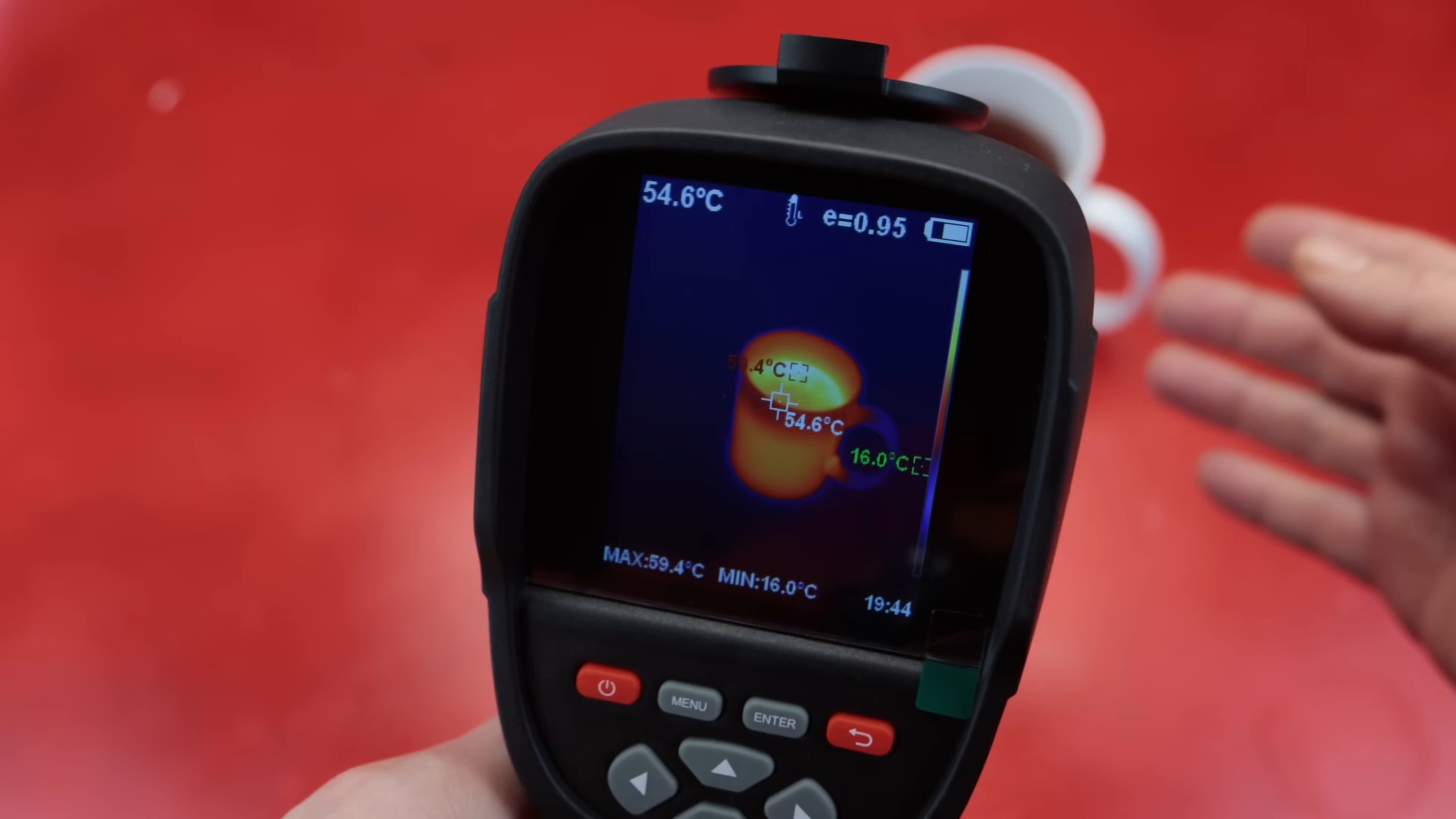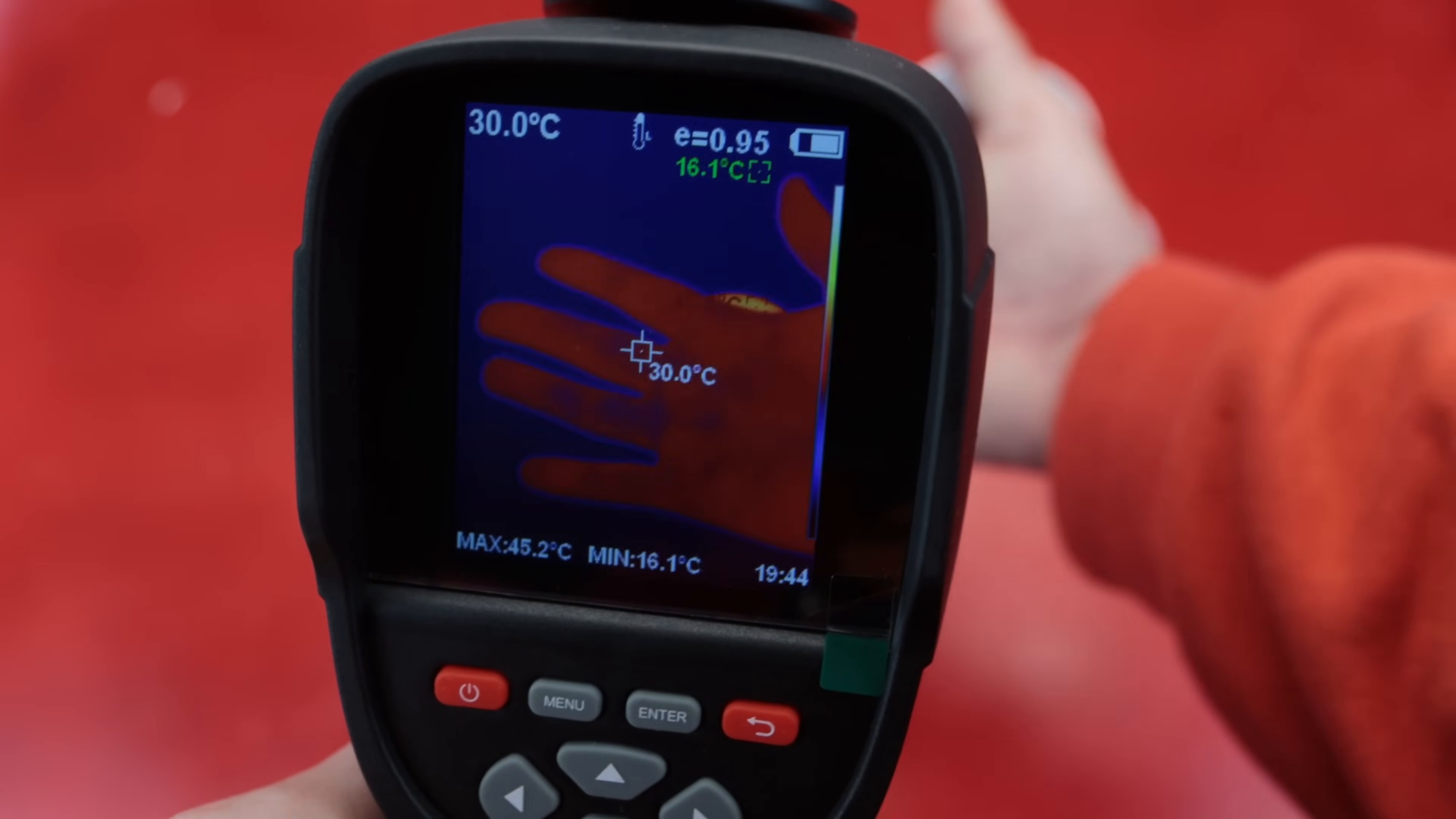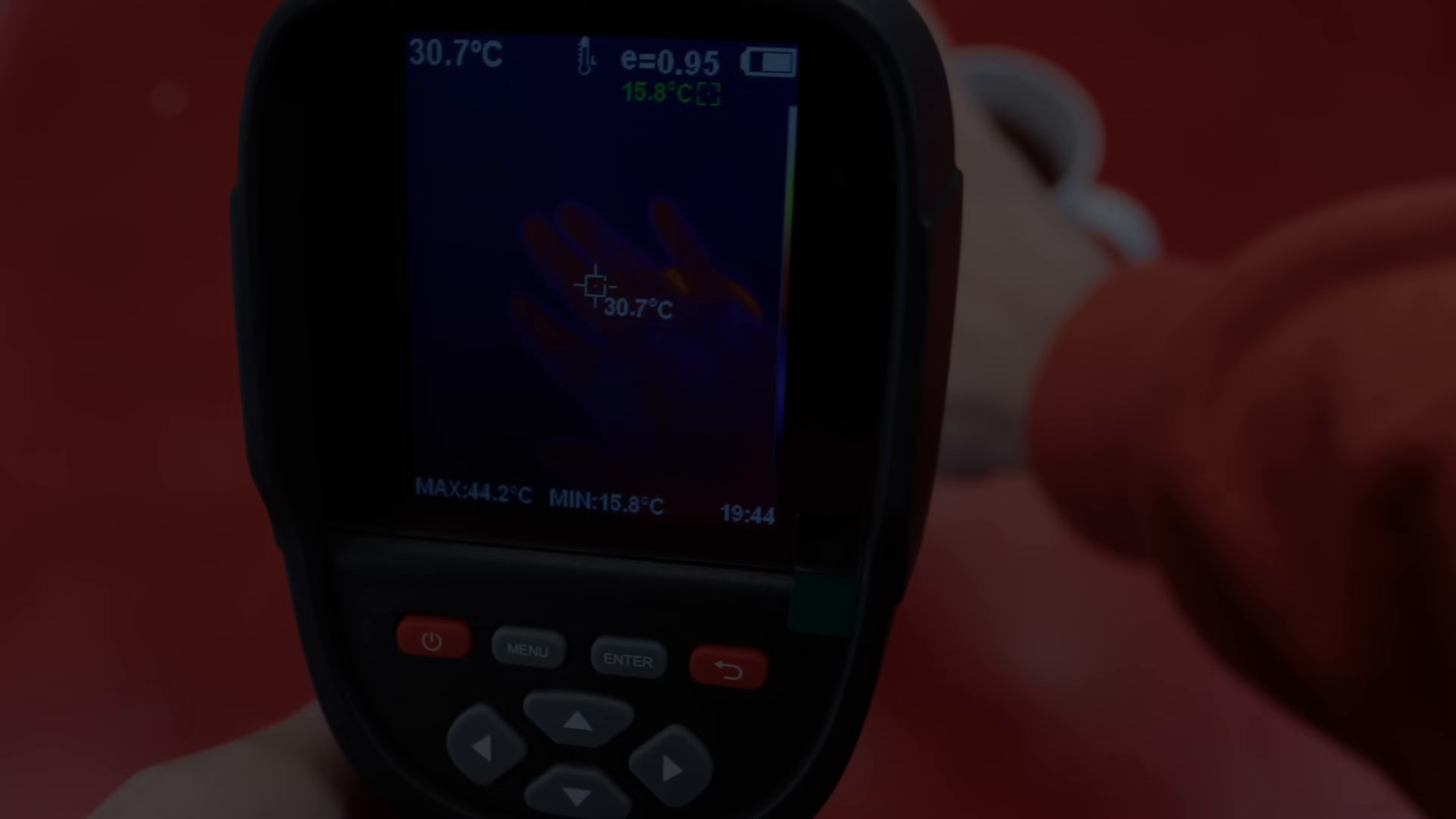To put it simply, thermal cameras detect infrared radiation, essentially heat emitted by objects, and convert it into a visual image that shows temperature differences. They usually work best when there are temperature differences because without them you won't be able to see objects clearly.